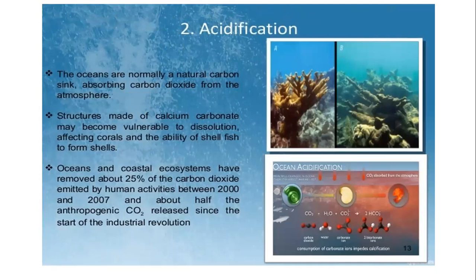Another human impact is acidification. The oceans act as a natural carbon sink, absorbing carbon dioxide from the atmosphere. Structures made of calcium carbonate may become vulnerable to dissolution, affecting corals and shellfish. Oceans and coastal ecosystems have removed about 25 percent of the carbon dioxide emitted by human activities between 2000 and 2007, and about half the anthropogenic carbon dioxide released since the start of the industrial revolution. Acidification can harm marine life.